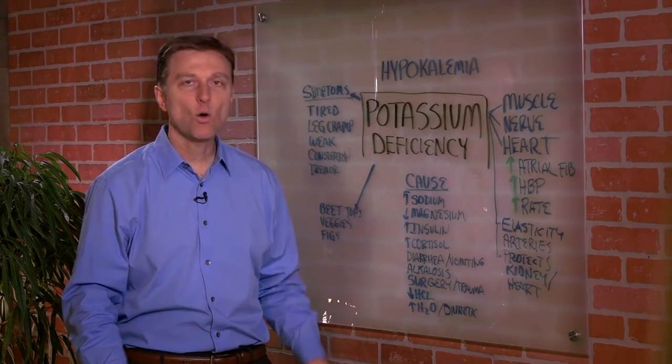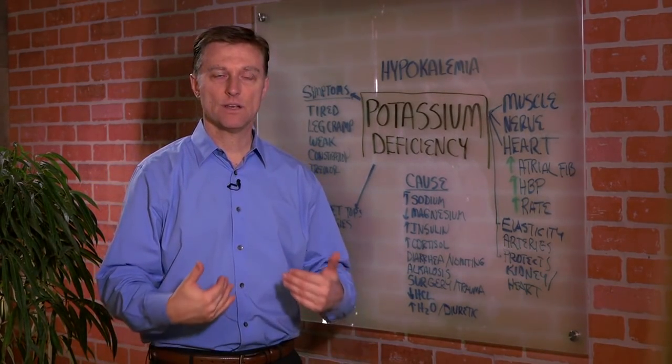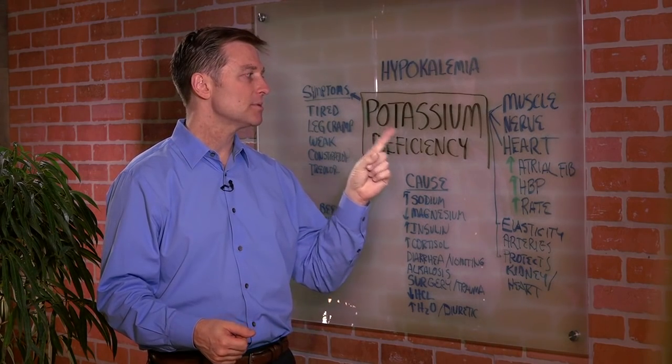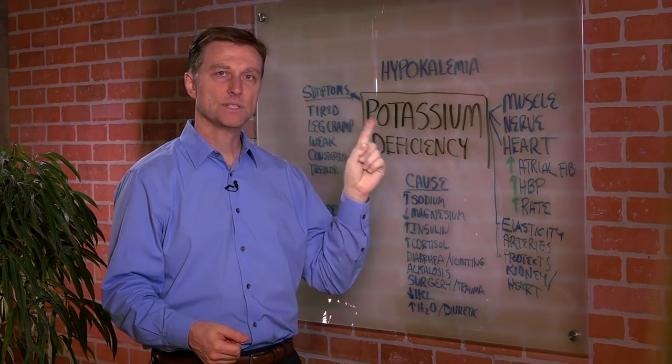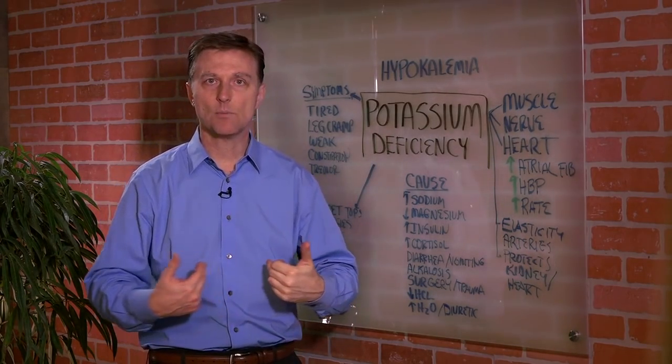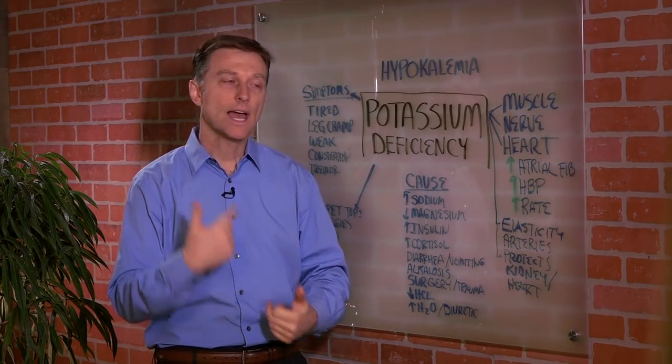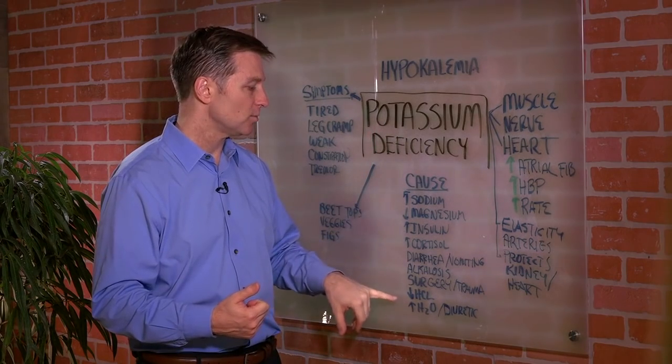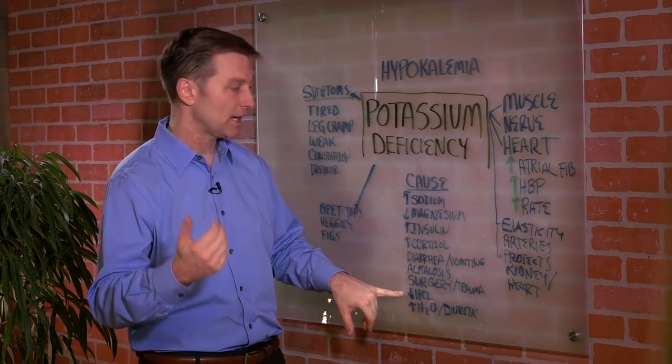And then we have low hydrochloric acid. When you don't have enough acid in your stomach, you can't absorb potassium. And then you have potassium problems. So it takes potassium to keep the stomach acids correct. And also taking potassium will help you digest and create stomach acids.